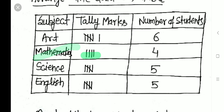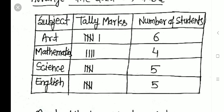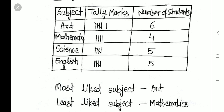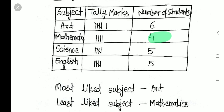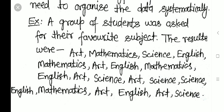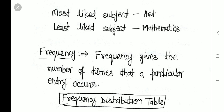For Mathematics the count is 4 students; for Science it is 5; for English it is also 5. Now, seeing this table, we can answer clearly: the most liked subject has the maximum number of students — which is 6, for Arts. The least liked subject has the minimum — which is 4, for Mathematics. So when we arrange unorganized data, it gives clear inferences and meaningful information.